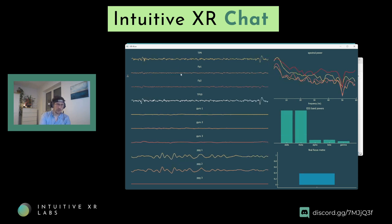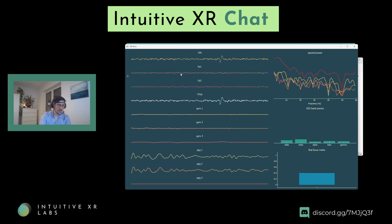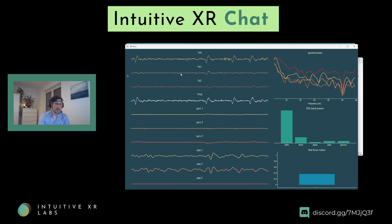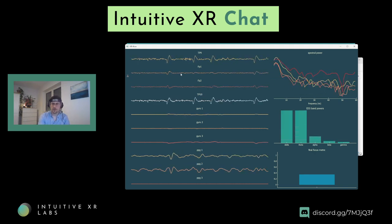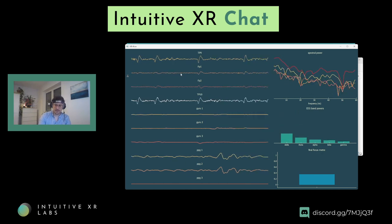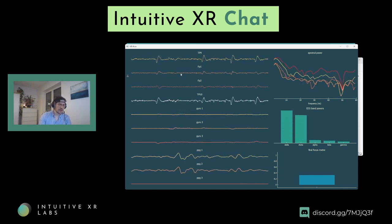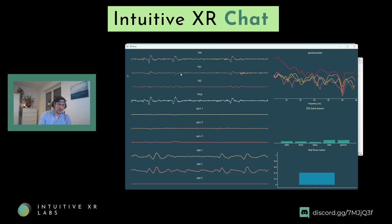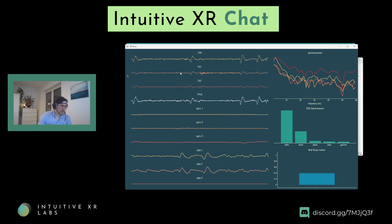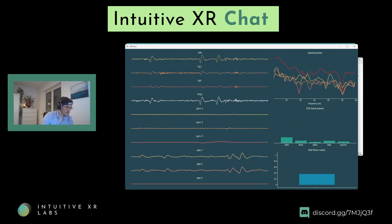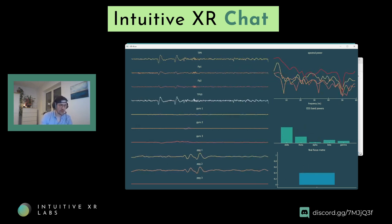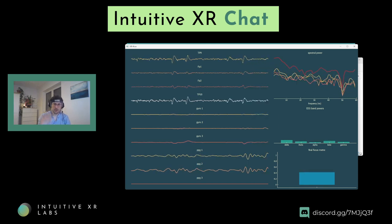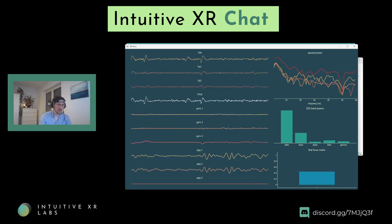Often people look at ratios instead of individual frequency bands. For example, the alpha-theta or theta-alpha ratio is used as a measure of workload. I use the engagement index — theta divided by alpha plus beta — and then divide it again by gamma, because gamma represents muscle activity and I want muscle activity to lower the perceived focus metric.